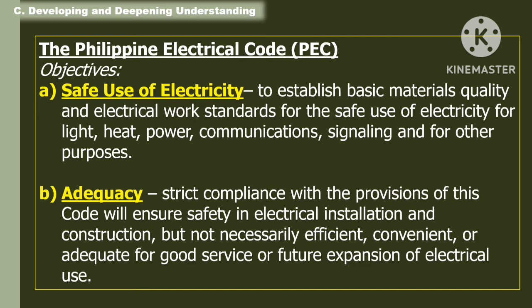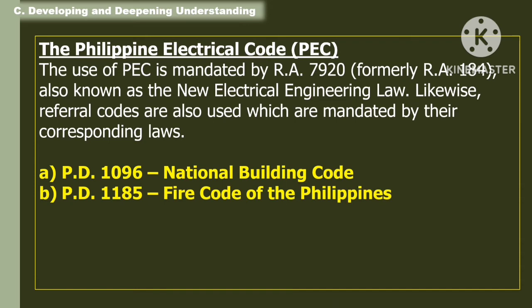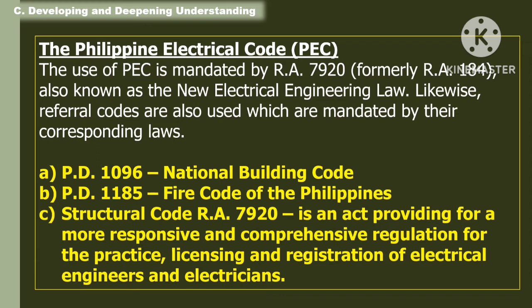The use of the Philippine Electrical Code is mandated by Republic Act 7920, or formerly RA 184, also known as the New Electrical Engineering Law. Likewise, referral codes are also used, mandated by their corresponding laws: A. PD 1096, also known as the National Building Code; B. PD 1185, also known as the Fire Code of the Philippines; and the Structural Code. Republic Act 7920 is an act providing for the more responsive and comprehensive regulation for the practice, licensing, and registration of electrical engineers and electricians.